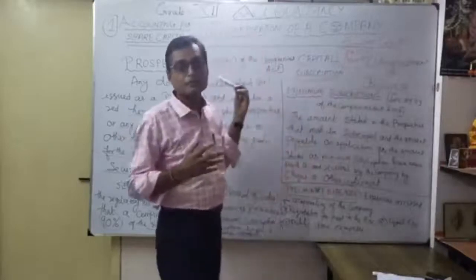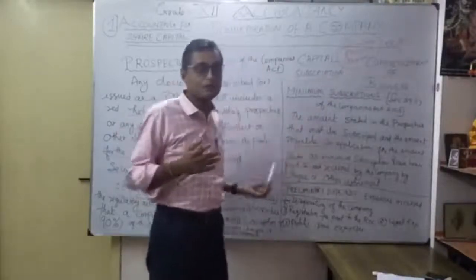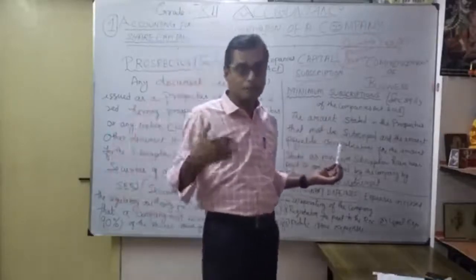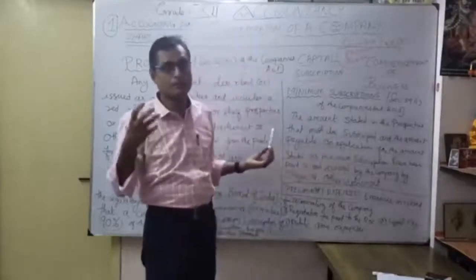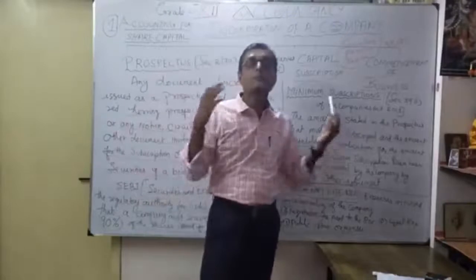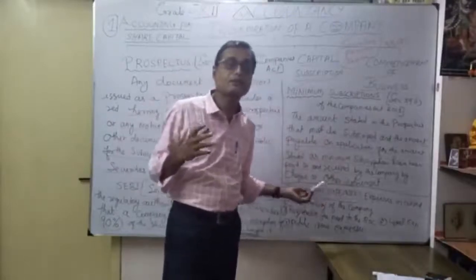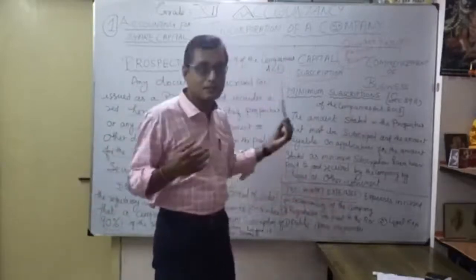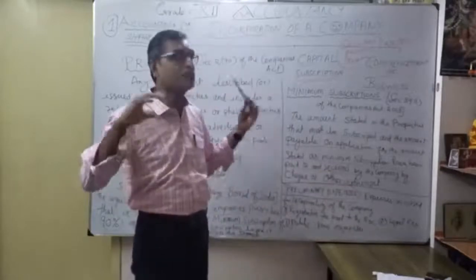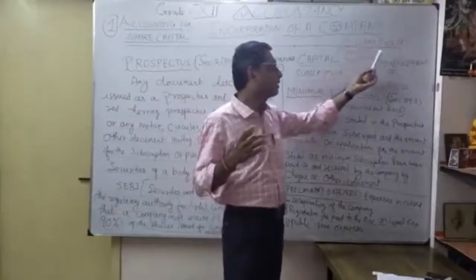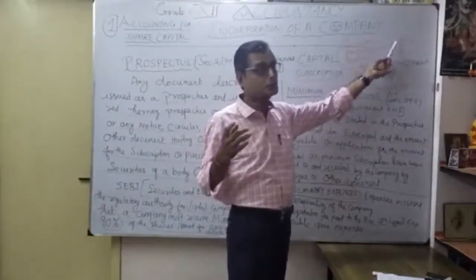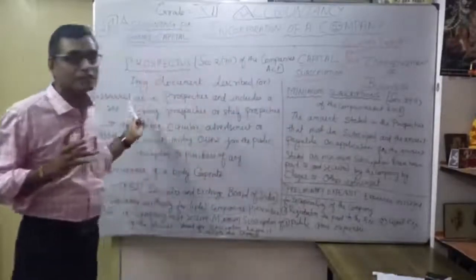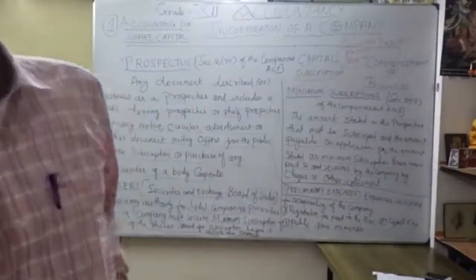Summary so far: prospectus, minimum subscription — under SEBI, the company must collect 90% of subscription before going for allotment. What is the meaning of preliminary expenses? Registration fees, legal expenses, public issue expenses — all expenses incurred for incorporating the company. These are written off under Section 52, Sub-section 2 using the Securities Premium Reserve. We will discuss the detailed procedures later.